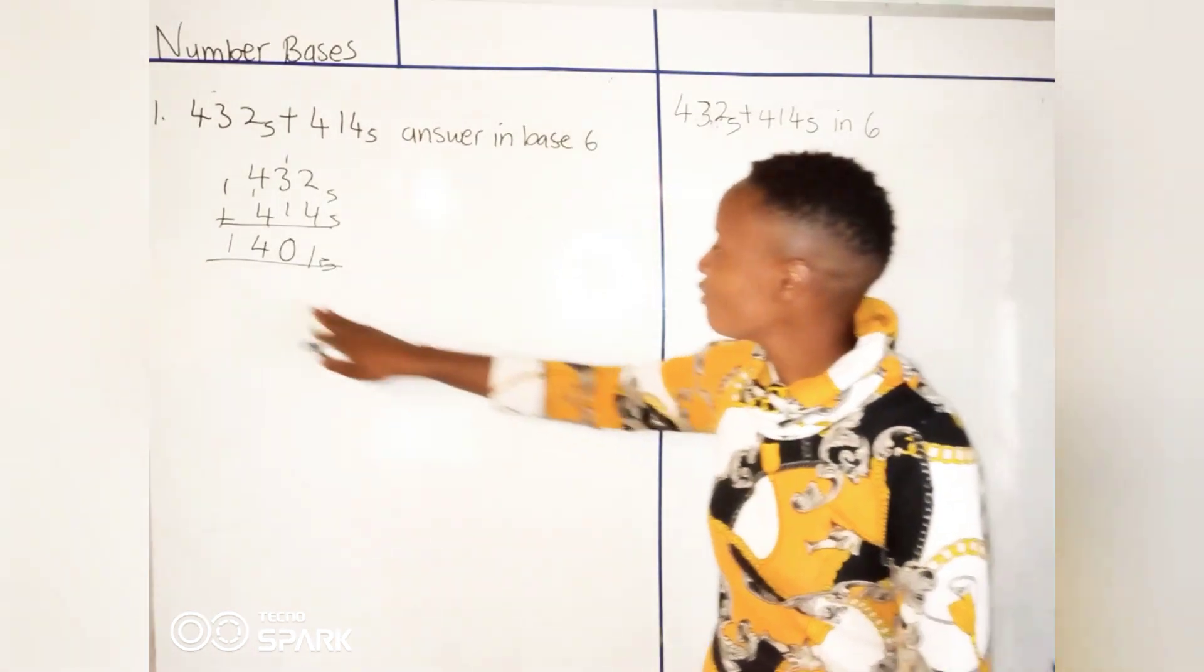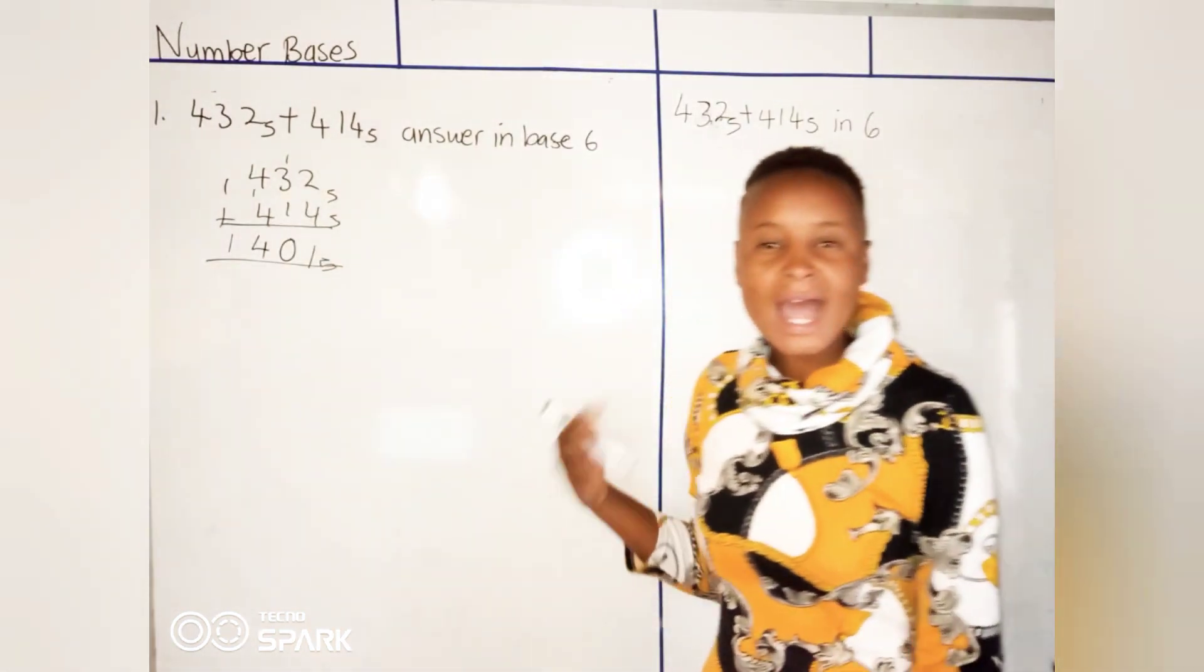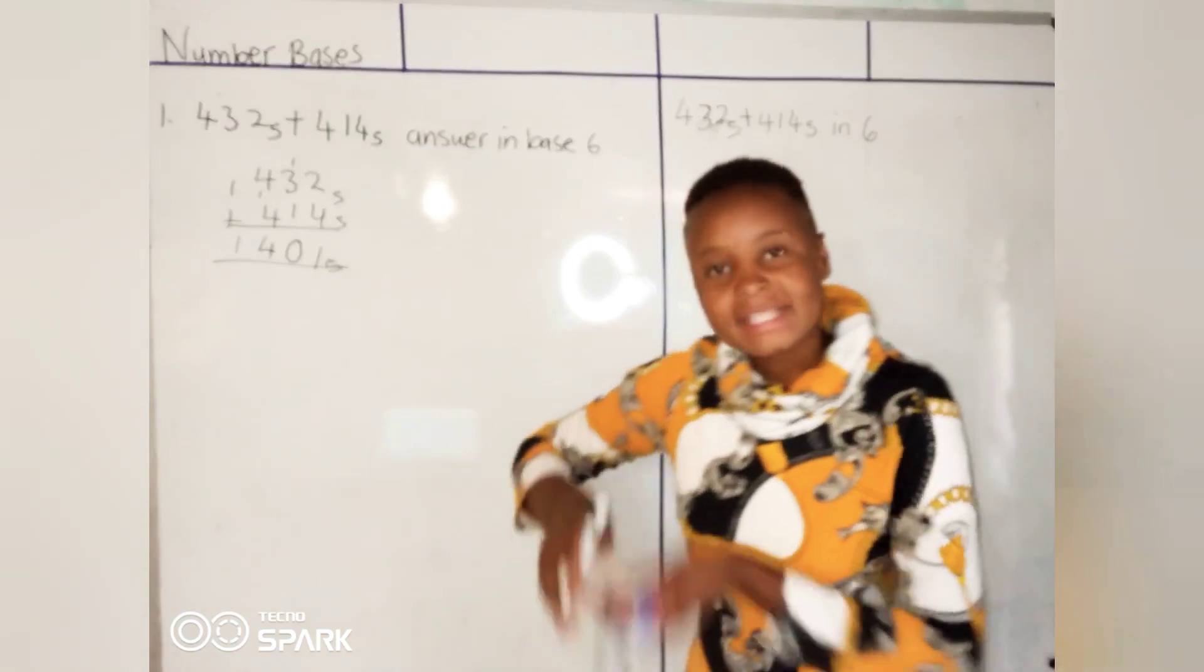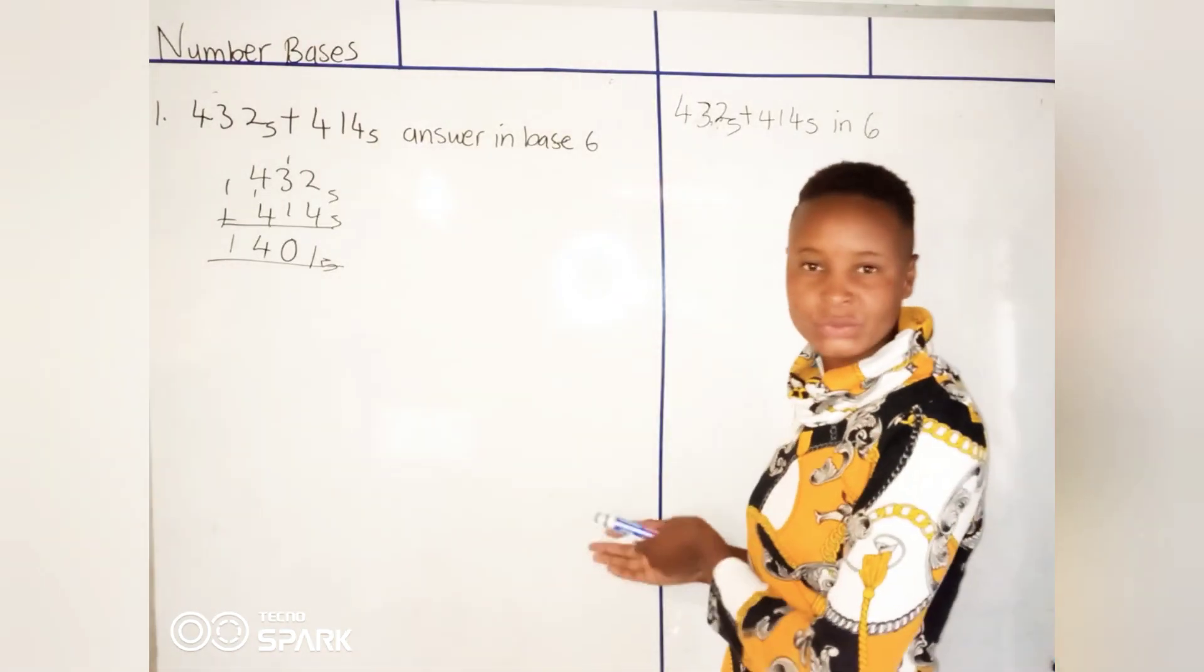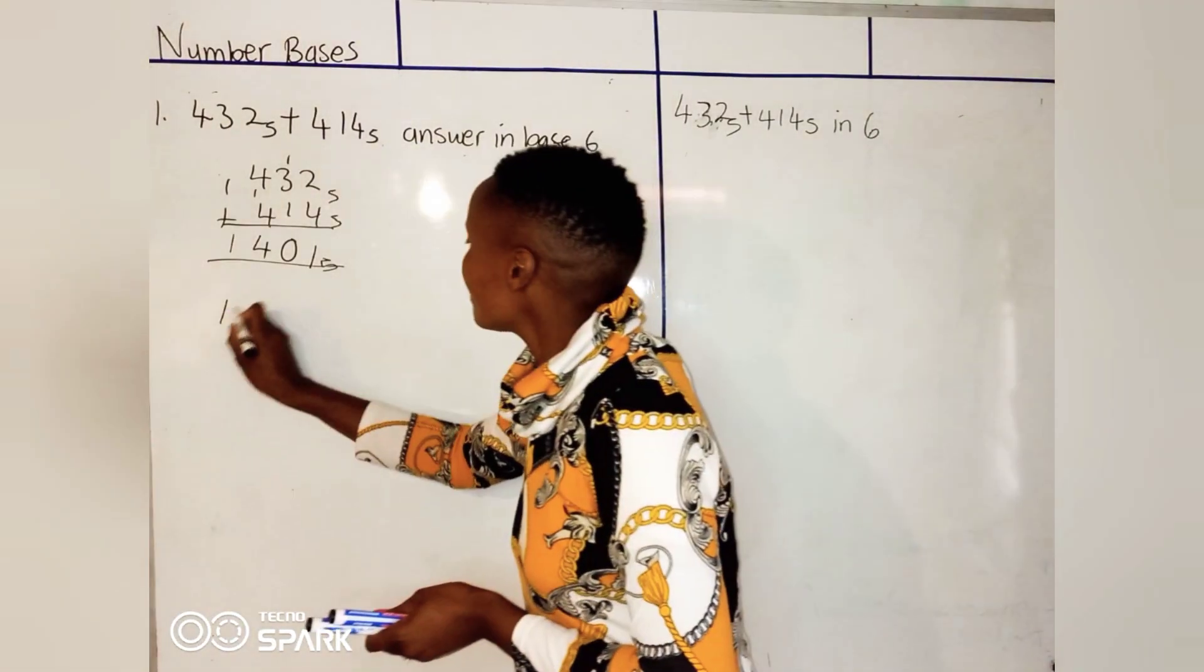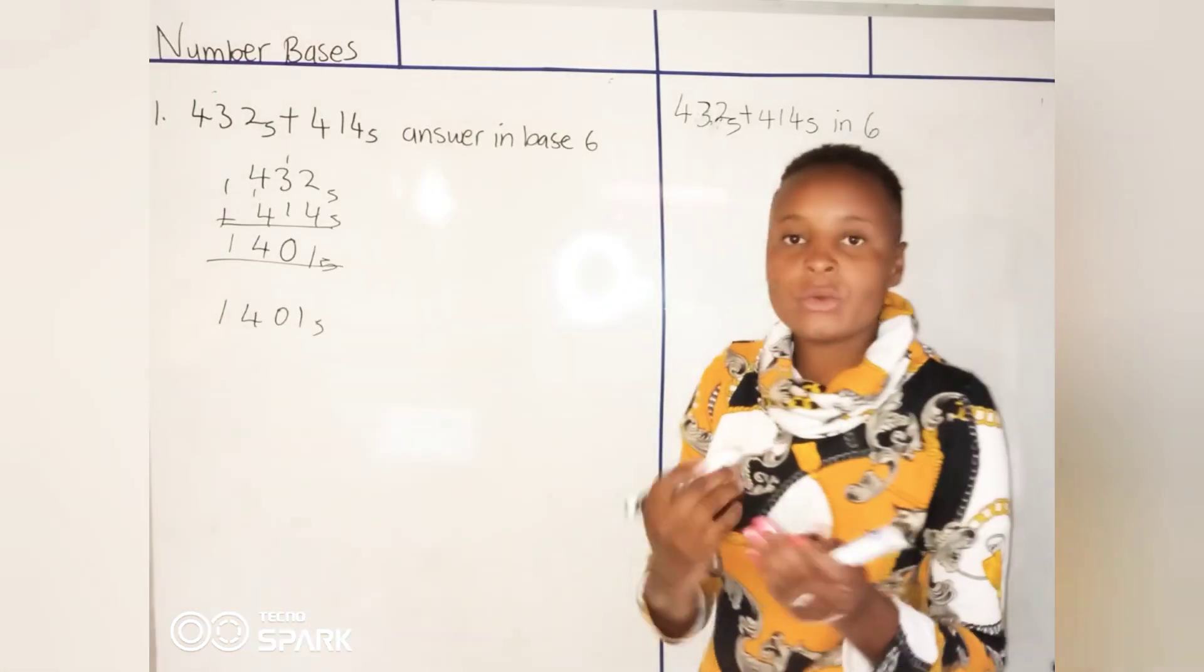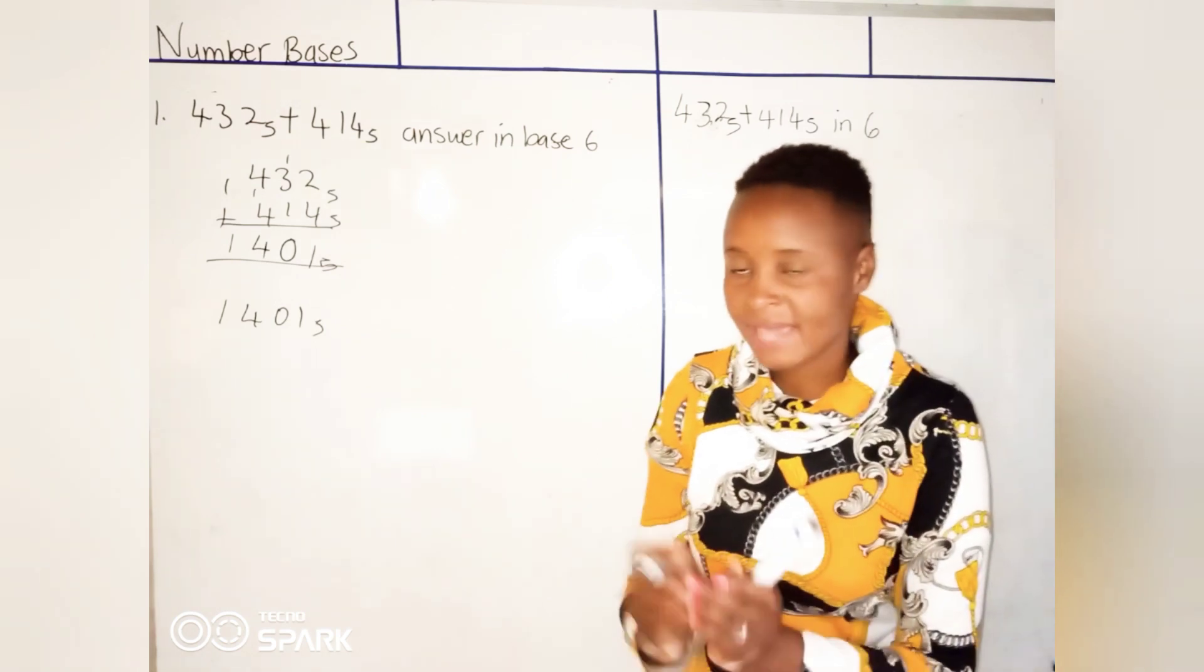Now they said give your answer in base 6, so we need to move from base 5 to base 6. How are we going to do that? We first need to go to base 10, from base 10 then go to base 6. So 1401 base 5, what is this number in base 10? How are we going to move from base 5 to base 10? Pay attention to this.